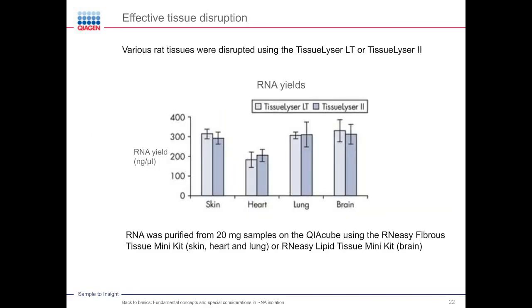An example showing the effectiveness of tissue disruption using mechanical methods: various rat tissues — skin, heart, lung, and brain — were disrupted using either the TissueLyser low-throughput or TissueLyser II. RNA was then purified using a QIAcube, and a spectrophotometer was used to assess RNA yields. The data clearly illustrates the consistency you can achieve with these mechanical methods, which is important for the reproducibility of your results — always a very big concern.